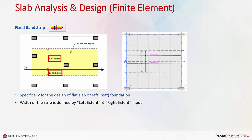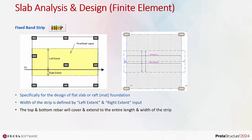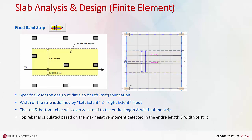The width of the strip is defined by left extent and right extent inputs. A single arrangement of top and bottom rebar will be designed, covering and extending to the entire length and width of the strip. Top rebar is calculated based on the maximum negative moment detected in the entire length and width of the strip.